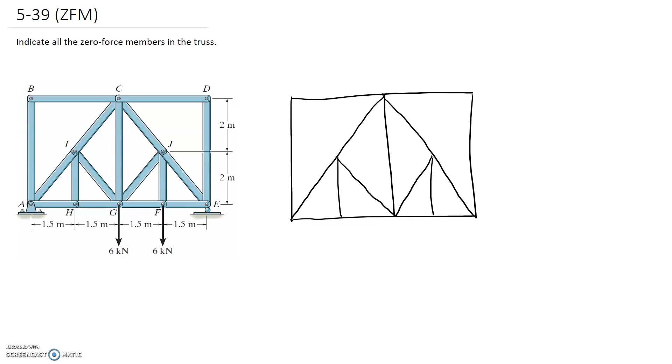Alright, so for this question what we're asked to do is identify all the zero force members in the truss. We're going to do this just using the visual method where we have the two different rules that we can apply for identifying zero force members.